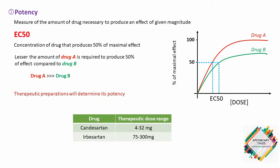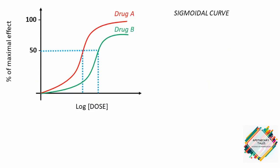Since the range of drug concentrations from 1% to 99% of the maximum response usually spans several orders of magnitude, semi-logarithmic plots are used so that the complete range of doses can be graphed. The sigmoidal curve that results simplifies the interpretation of the dose response curve.